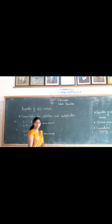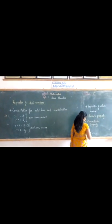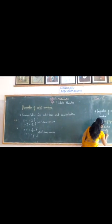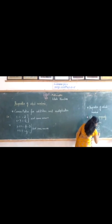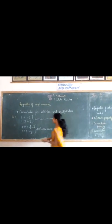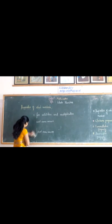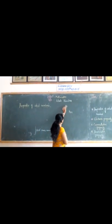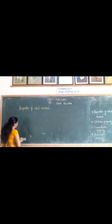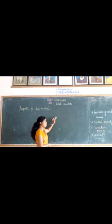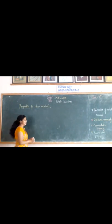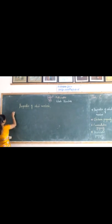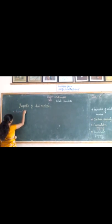Next, we move on to another property — that is, associative property. In the associative property, we use the order of three numbers. Let us consider one example for associative property.